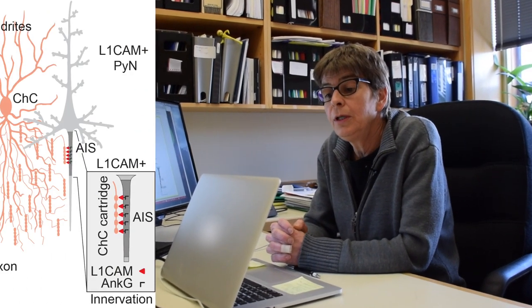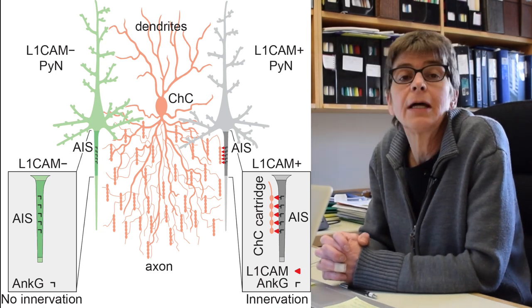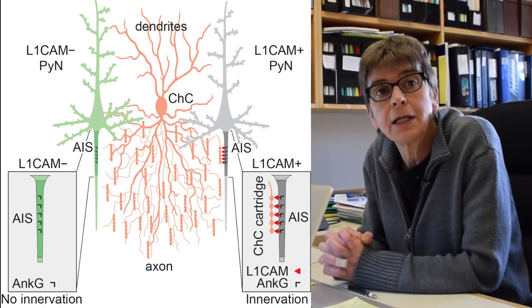To do so, we depleted L1-CAM at postnatal day P28 — that is, when all the connections have already been formed — to see whether that would affect the percentage of innervation. Intriguingly, when we silenced or depleted L1-CAM in the pyramidal neuron at postnatal day P28, we indeed observed a significant decrease in the percentage of AISs innervated by the chandelier cells.